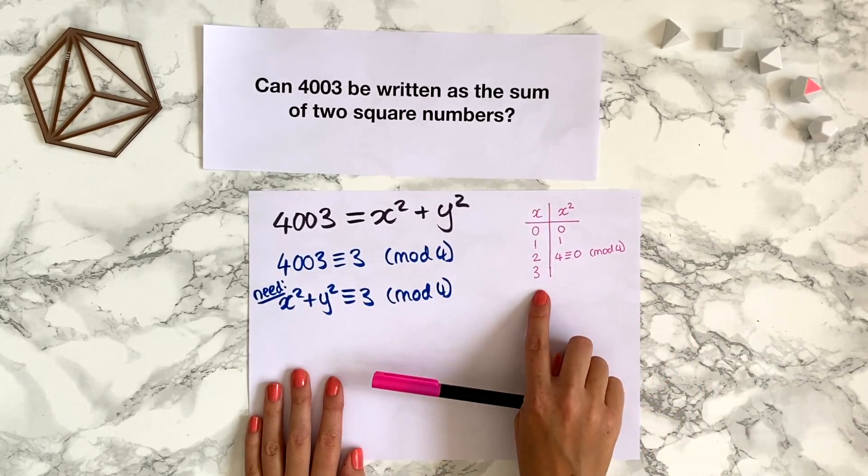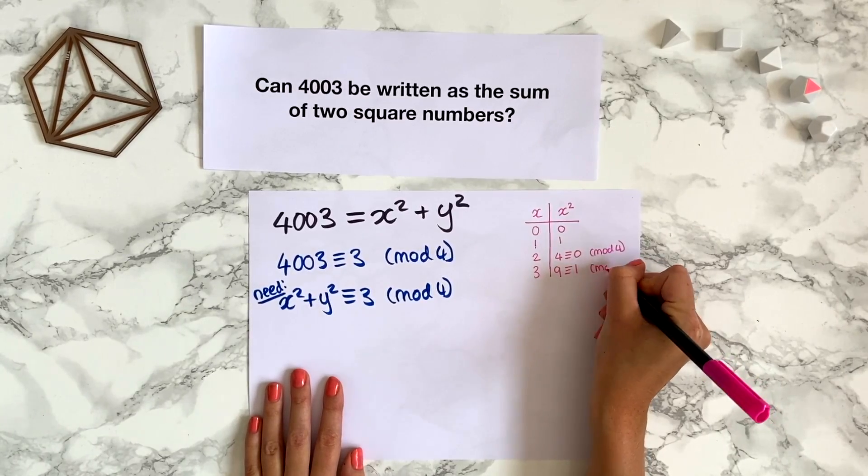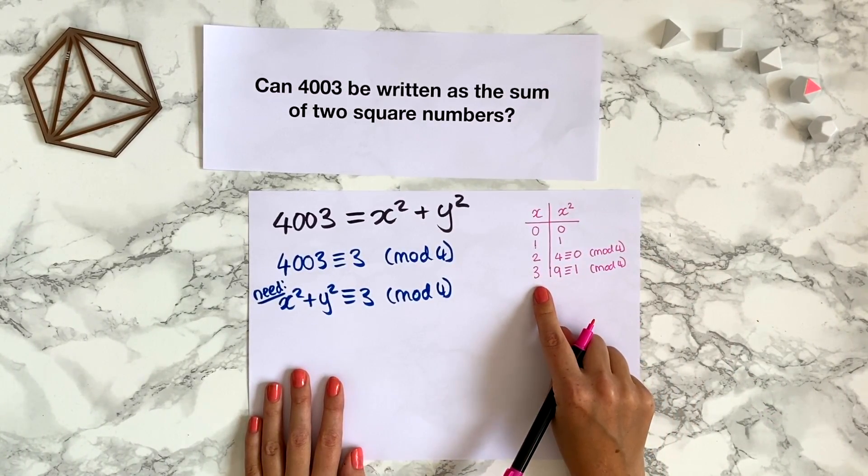If x is 3, then x squared is 9, and that's congruent to 1 modulo 4. 9 leaves remainder 1 when you divide it by 4.